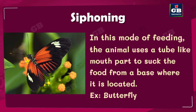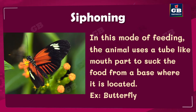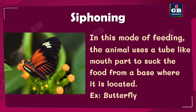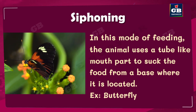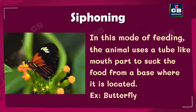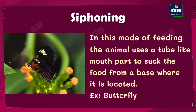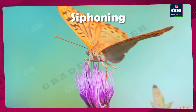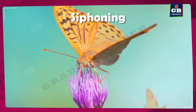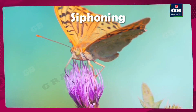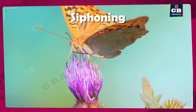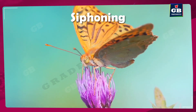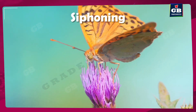Siphoning is a mode of feeding in which an animal uses a tube-like mouth part to suck food from a source — that means the food is present in liquid form and is sucked with the help of a tube. This kind of feeding is called siphoning. It is observed in butterflies, which have a tube-like mouth part used to suck nectar from flowers.